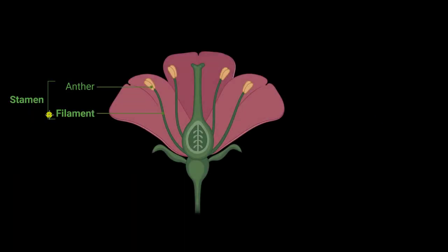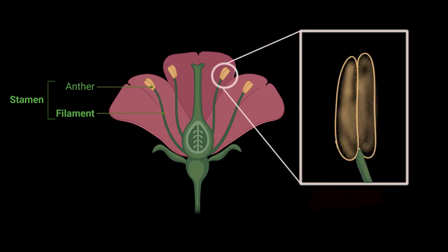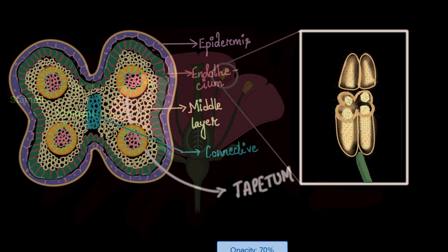We have already discussed the main reproductive part of a flower and looked deep into how the anther looks, what is inside the anther, and the detailed cross-sectional structure of an anther.